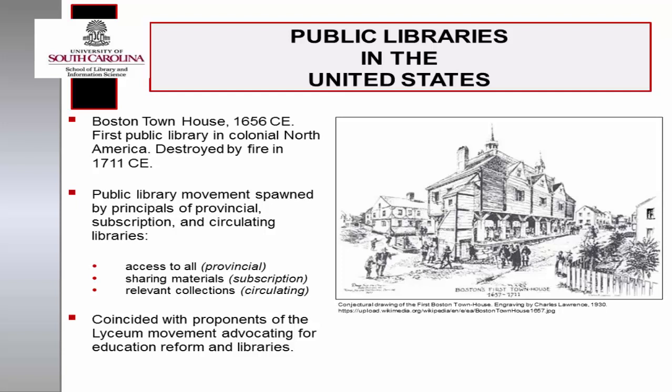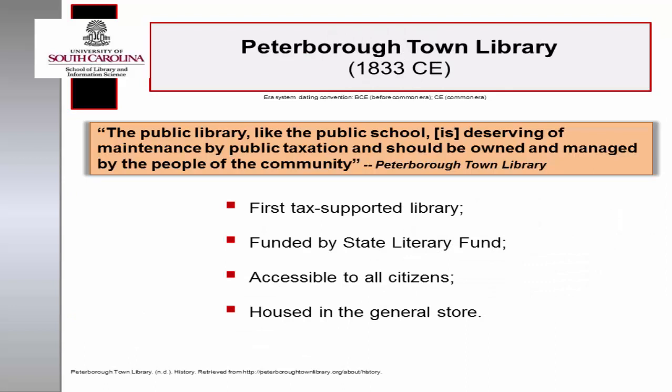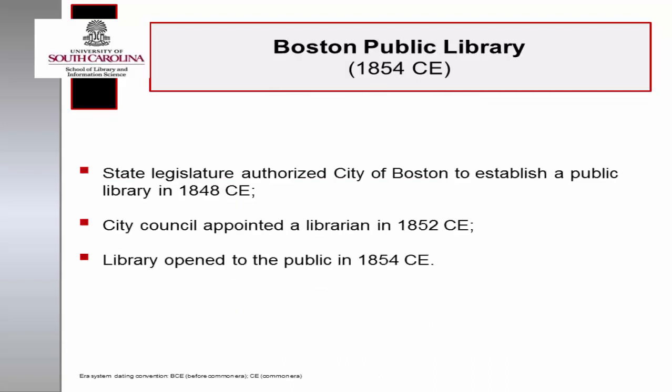These were the precursors of the public library movement in the United States. The first tax-supported public library in the United States was the Peterborough Town Library in New Hampshire, founded in 1833 CE at a Peterborough town meeting. Funds were allocated from the State Literary Fund to purchase books for use by all citizens of Peterborough, and the library was housed in the general store and post office. The city of Boston was authorized to establish and maintain a public library in 1848 CE. A librarian was appointed by city council in 1852 CE, and the Boston Public Library opened to the public in 1854 CE. In 1870 CE, the library opened a branch in East Boston, making it the first public library system.